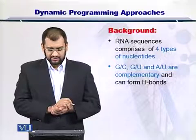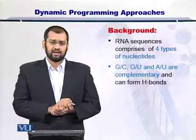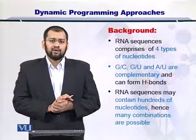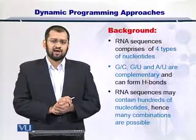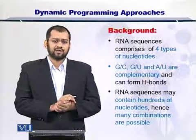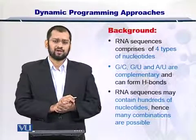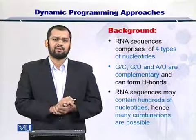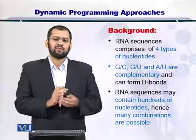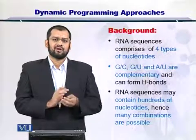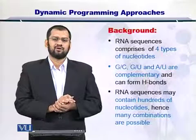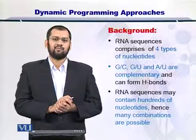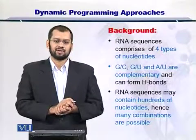GC, GU, and AU form the hydrogen bonds. Since every RNA sequence may have a large number of these four nucleotides, there are so many possible combinations. So if there are so many possible combinations from complementary base pairings, how can we come up with the best solution for secondary structure prediction?